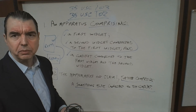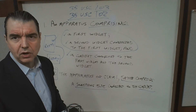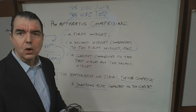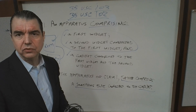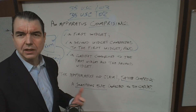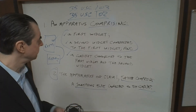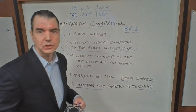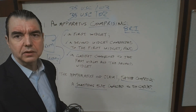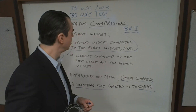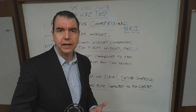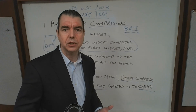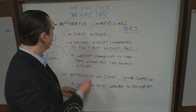The examiner has to perform what's referred to as claim construction. Claim construction can also happen in a court during an infringement proceeding. The examiner does claim construction using what's called the Broadest Reasonable Interpretation, or BRI. The Broadest Reasonable Interpretation still has to be done in light of your specification. It means the examiner has to look to your specification and determine if the claim terms can be interpreted more broadly or if they need a narrower interpretation defined within the body of your specification.